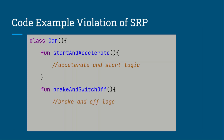Let's look at a simple coding example. Here we have two functions: start and accelerate, and brake and switch off. This code directly violates the SRP principle because these two functions are doing almost four actions. So if you want to maintain the start code, you're going to mess up the accelerate code as well. This code is violating the SRP principle.